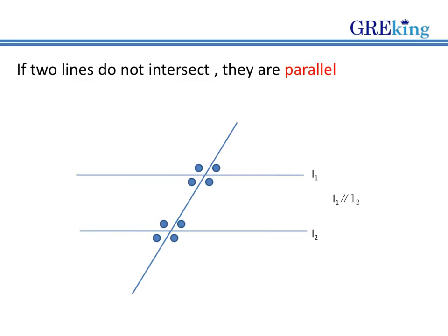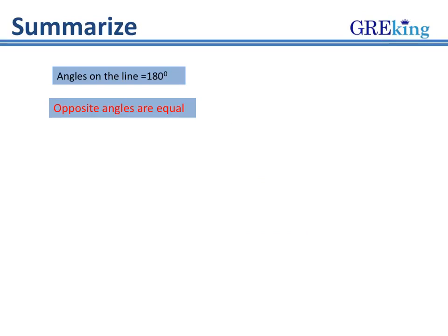Now if two lines are drawn which do not intersect each other they are referred to as parallel lines. The summary of whatever we have learnt today is that angles lying on the same line is always equal to 180 degrees. They are called collinear angles and opposite angles are equal.